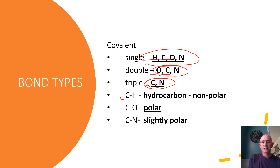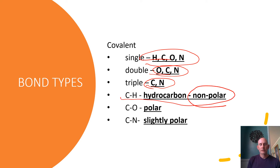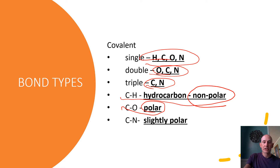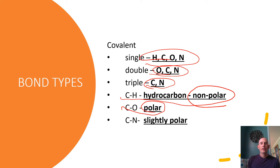Carbon and hydrogen are nonpolar — that's important for when we talk about fats and oils. Carbon and oxygen is polar, just like oxygen and hydrogen. Carbon and nitrogen is slightly polar. Those interactive forces allow molecules to bind together, causing lots of different properties.